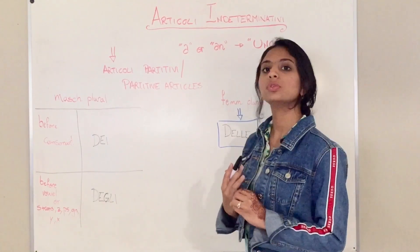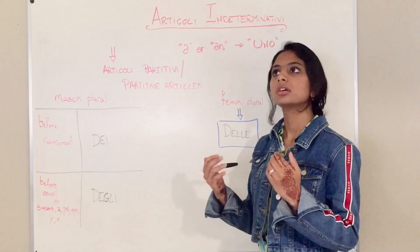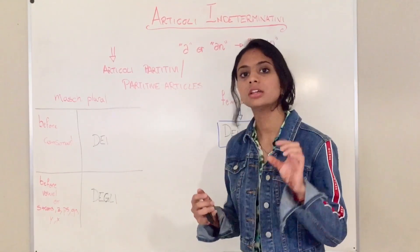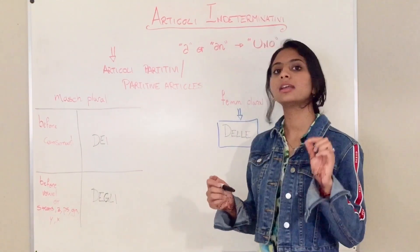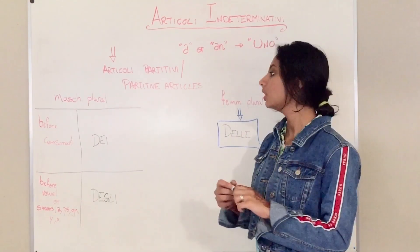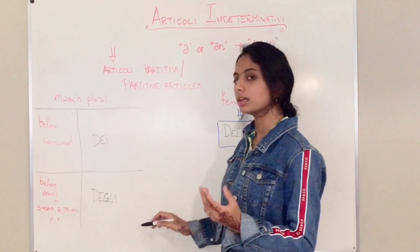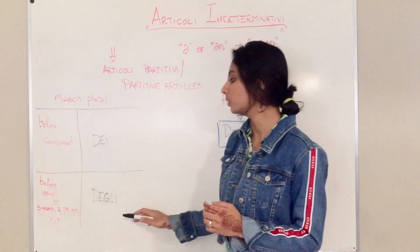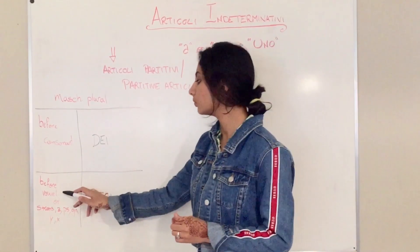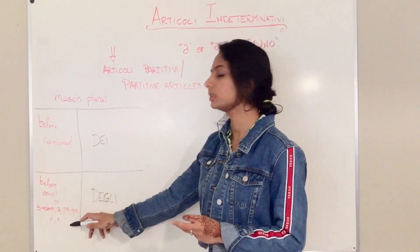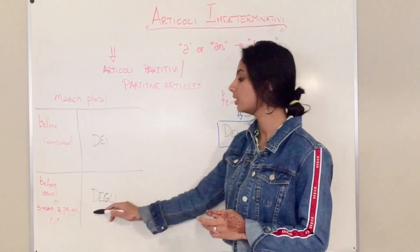If you see a word with a consonant — like un cane, spelled C-A-N-E — the C is a consonant, so you put dei cani. If you see a vowel before a word, or any of those special rules like s plus consonant, z, etc., you put degli — D-E-G-L-I — degli.